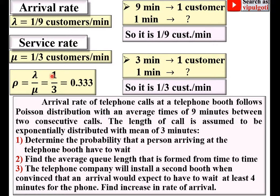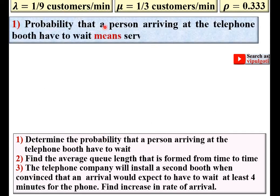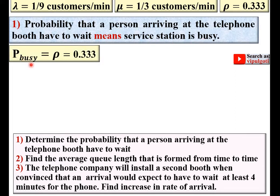For any queuing problem, the common steps are: identify lambda, then mu, then find the utilization factor. Now for question one — determine the probability that a person arriving at the telephone booth has to wait. Having to wait means the telephone booth is busy, i.e., the service station is busy. The probability of a busy station is exactly equal to the utilization factor rho = 0.333.